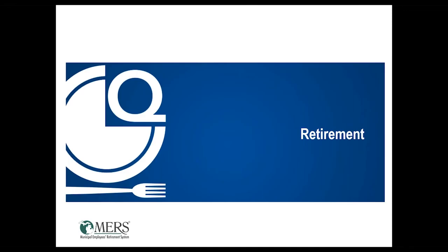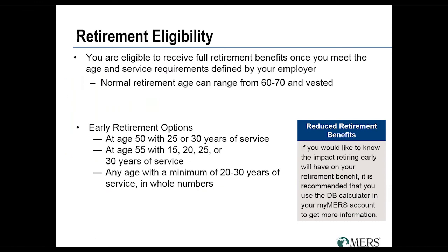You are eligible to receive full pension benefits once you meet both the age and service requirements defined by your employer. Normal retirement age in the MERS system can range from age 60 to 70, but the vast majority of plans have age 60 set as normal retirement age. You may be in a plan with an early retirement option — the most common is an F55 benefit, which lets you retire with full pension benefits at age 55, generally requiring 20, 25, or 30 years of service credit.